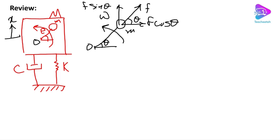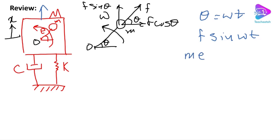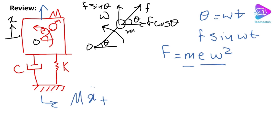Since theta equals omega·t, the force applied to the system is F·sin(ωt). The force amplitude F is found from dynamics as the centrifugal force: F = meω², where the centrifugal acceleration is e·ω² and e is the eccentricity. So looking at this system to find the equation of motion, it is: M·ẍ + c·ẋ + k·x = meω²·sin(ωt).